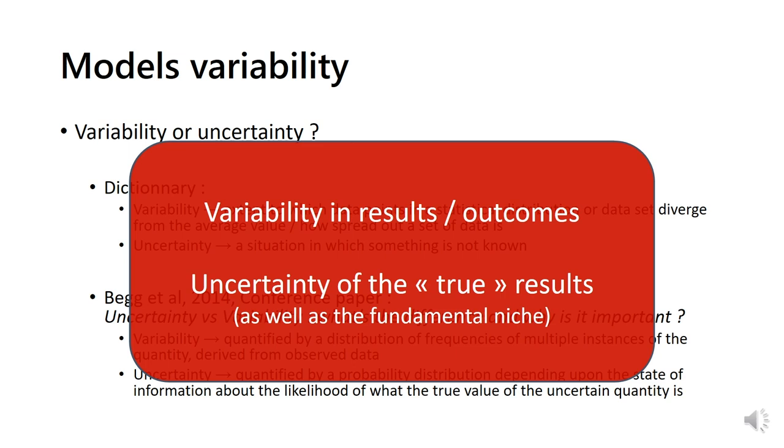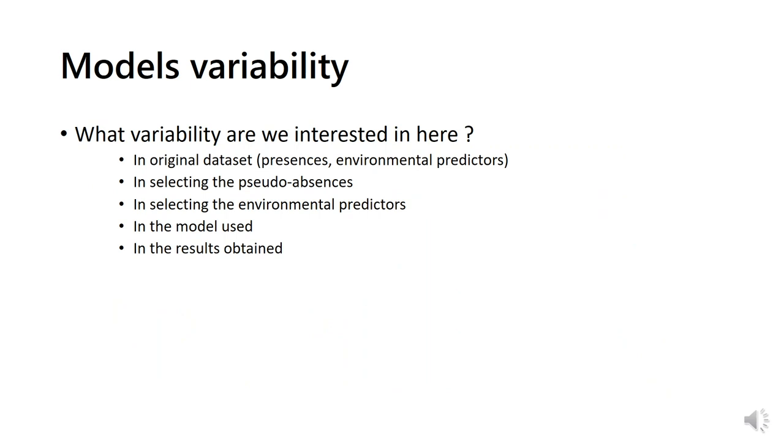So, in what variability are we interested in here? As discussed along this presentation, the variability in results may come from the selected dataset, the presences like the environmental predictors, the selection of pseudo-absences, the selection of environmental predictors by the model used, the model used, and at last the variability in the results themselves. I will not discuss the variability coming from the selection of environmental predictors, as this is done automatically by the models in Biomod2.